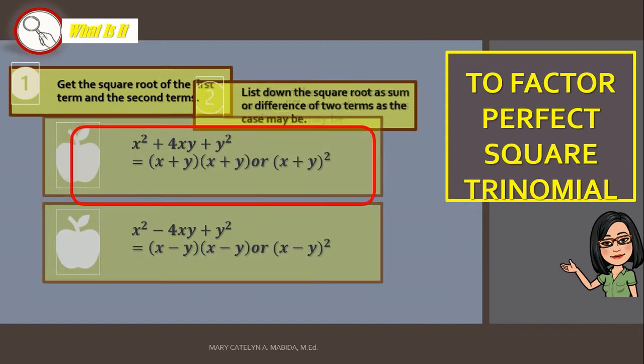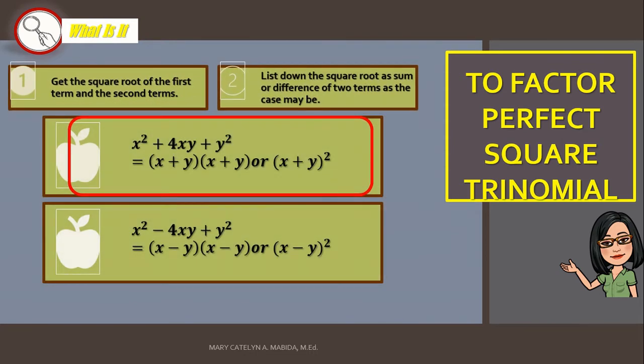You can follow these relationships to factor perfect square trinomials. First relationship is when the first sign is a positive, and therefore, you should have positives or additions. So, x squared plus 4xy plus y squared is equal to the quantity of x plus y times the quantity of x plus y, or the quantity of x plus y squared.